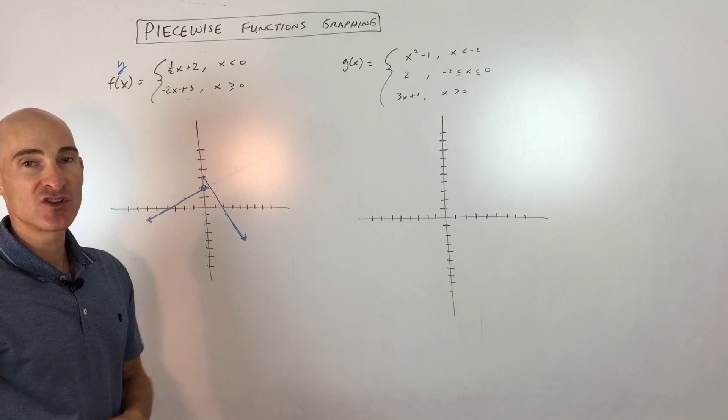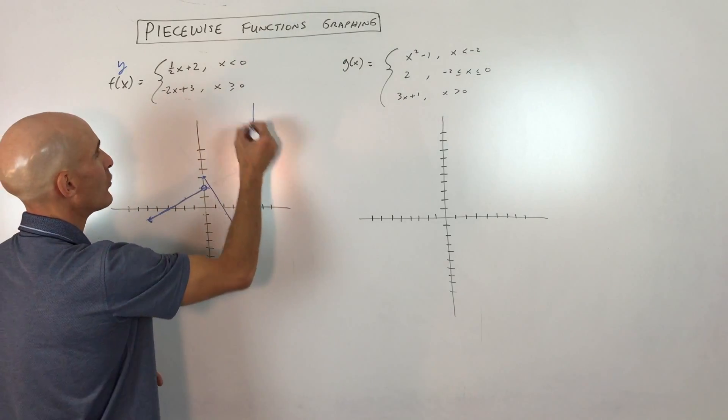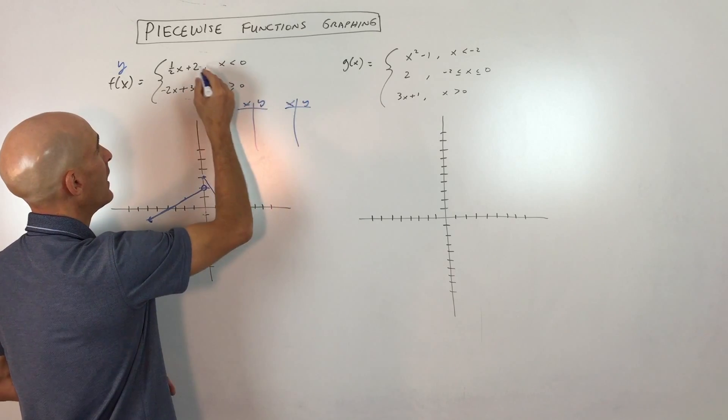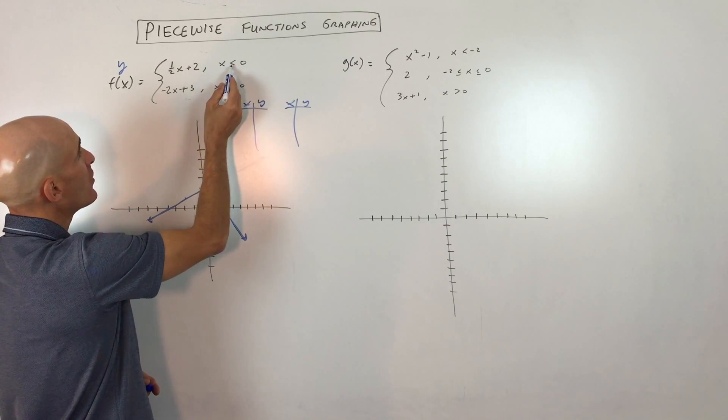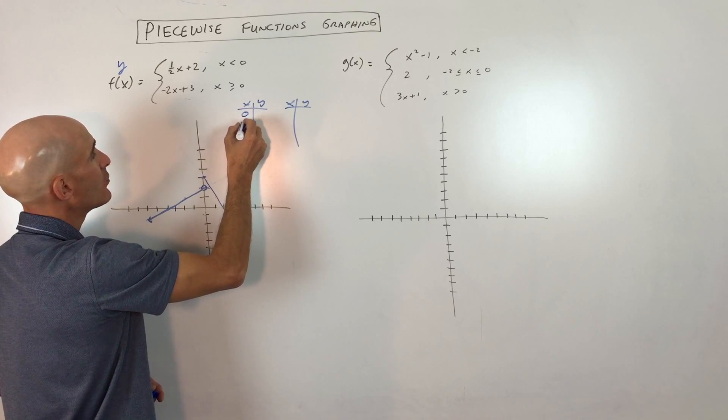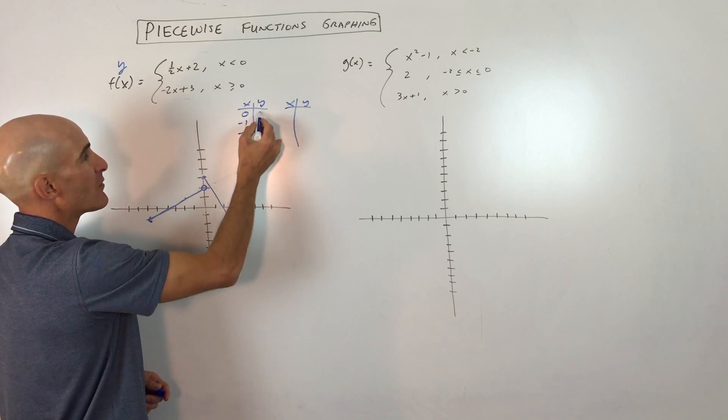Now, you know, I mentioned there was a different way to do this. The other way to do this is you can make a table. You can make an xy table for both of these piecewise functions. So for this one, it says x is less than 0. So I'm going to pick values that are 0, negative 1, negative 2, negative 3, and I'm going to plot those points.